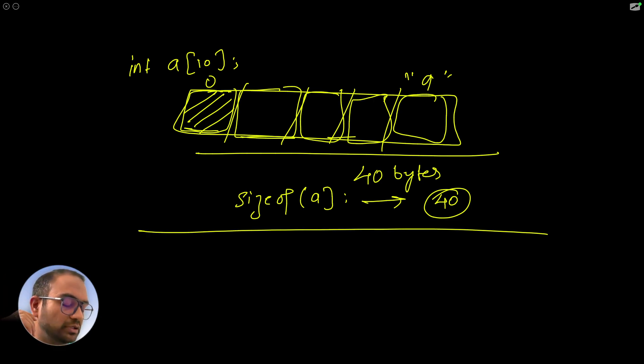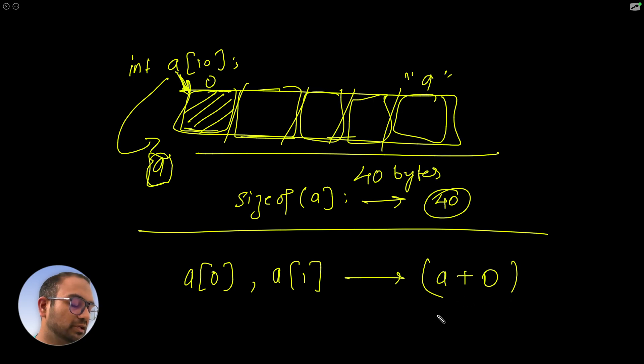Behind the scene, an array behaves like a pointer. A is essentially pointing or holding the address of the first element of that array. If we do a[0], a[1], this translates into pointer arithmetic. It's the same as from a as a pointer, increment those many units in terms of the size of the data type.